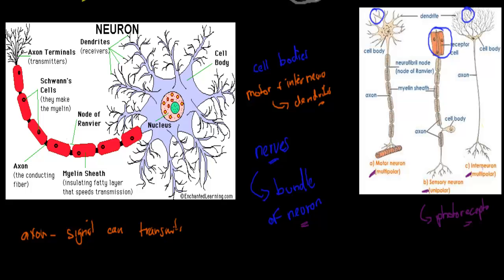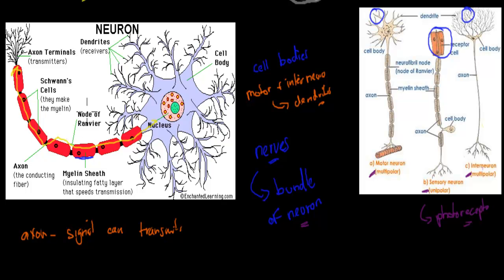There are also myelin sheets. You can see them here. Even though you can't see them clearly on the interneuron, they also have these sheets. The myelin sheets make sure that the electrical impulse can't escape to the sides — the electrical impulse travels from the head to the tail, and the myelin sheets keep it from leaving the actual neuron.